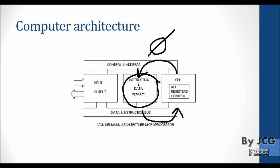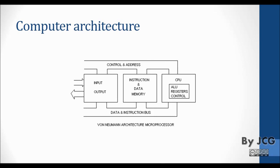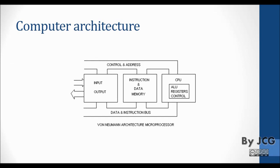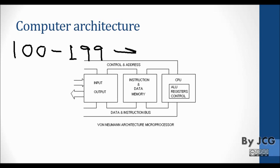The other type of architecture is the Von Neumann architecture. In this architecture, the same path is used to access both data and instructions. The instruction memory and data memory are shared, meaning address zero can only be either instruction or data — not both. To handle this, a range is defined: for example, addresses zero to ninety-nine for instructions and addresses one hundred to one hundred ninety-nine for data.